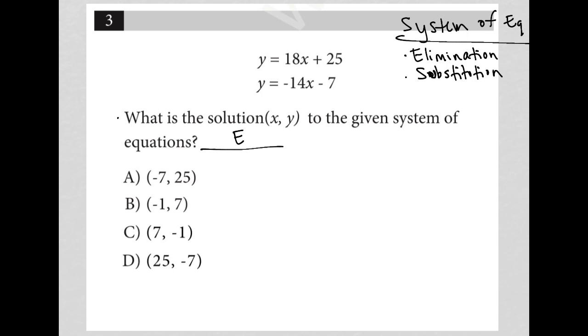To eliminate a variable, which is the first step in the process of elimination with the system of equations, I can subtract the bottom equation from the top equation. In doing so, this y will become negative, this negative 14x will become actually a positive 14x, and this negative 7 will become a positive 7. That would lead to the y variables being eliminated, which is exactly what I wanted.